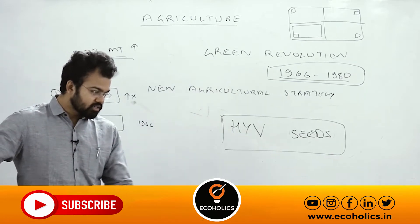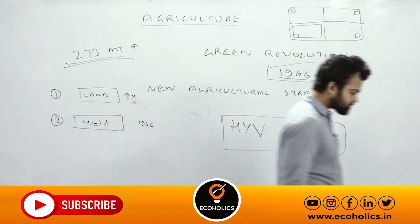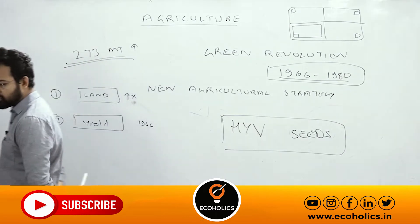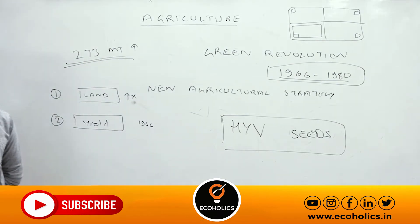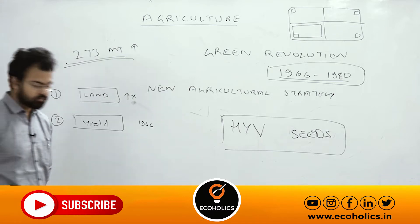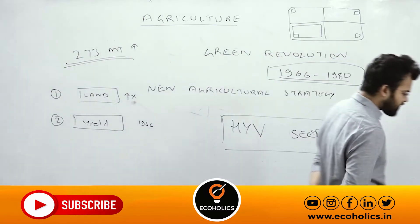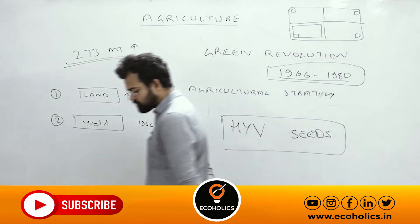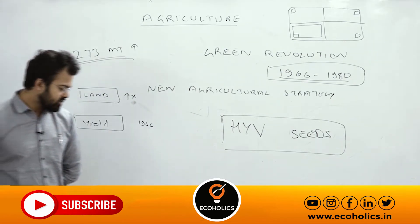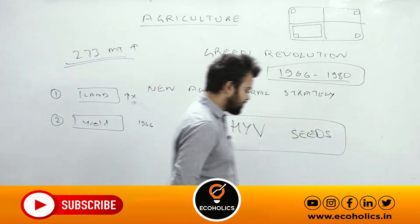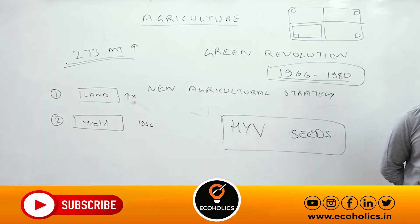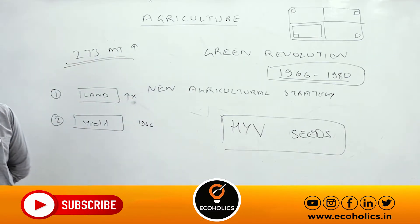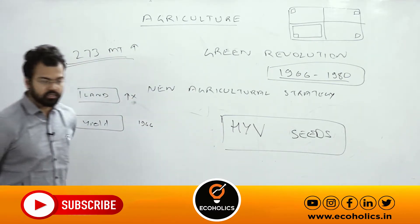Now writing the challenges. First and biggest challenge: to achieve a higher agriculture growth rate. There are two options — first, increase the land area, which is near to impossible; second, increase the productivity or yield.